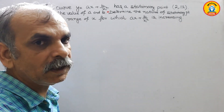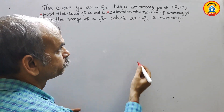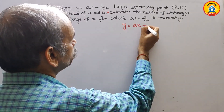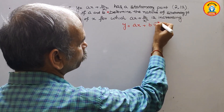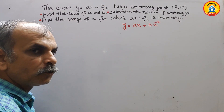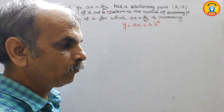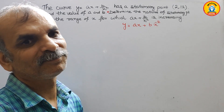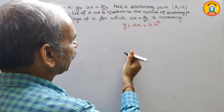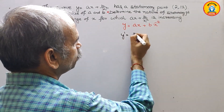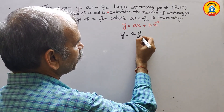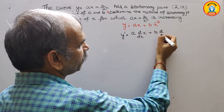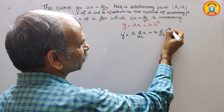We will write first what they have given. The equation is y equals ax plus b times x to the power of minus 2, bringing b to the numerator. Since they have given a stationary point, we need to find y dash. So y dash equals a times d/dx of x plus b times d/dx of x to the power of minus 2.